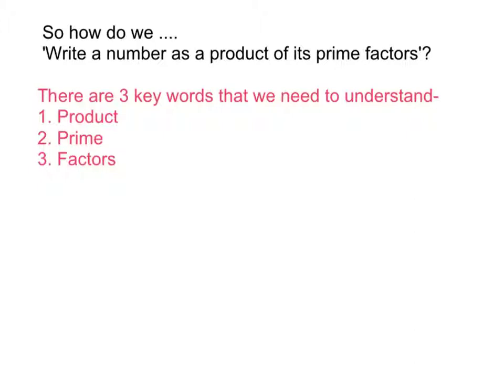So let's start with the first one. If I asked you to find the product of 3 and 4, all I'm asking you to do is multiply them. So the product of 3 and 4 would be 12. If I asked you to find the product of 2 and 10, the answer would be 20.